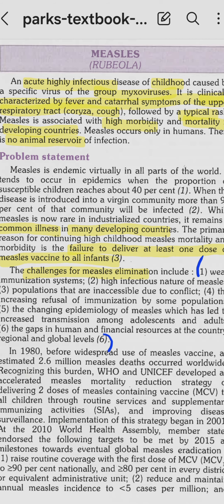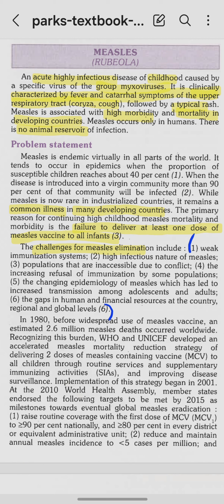The primary reason for continuing high childhood measles mortality and morbidity is the failure to deliver at least one dose of the measles vaccine to all infants. The measles vaccine is protective, and failure to deliver it is the main reason for continuing mortality and morbidity in children.